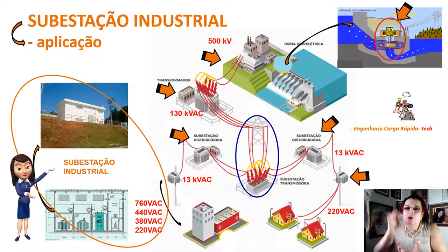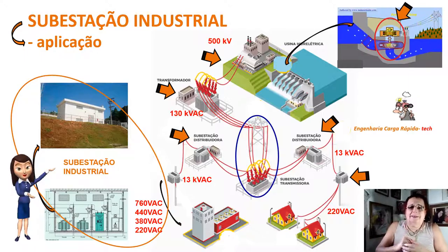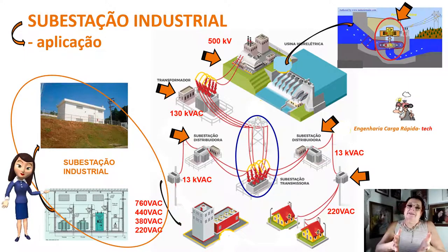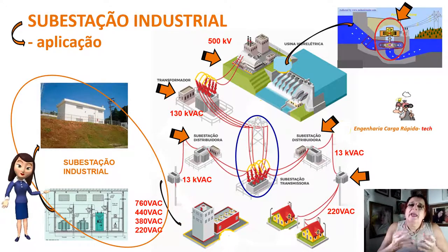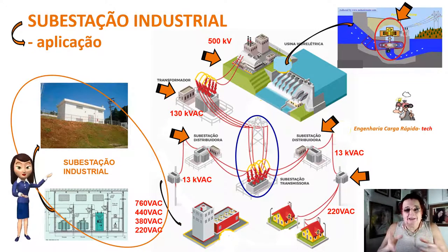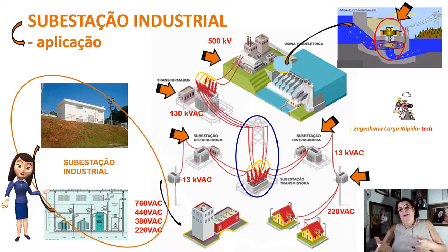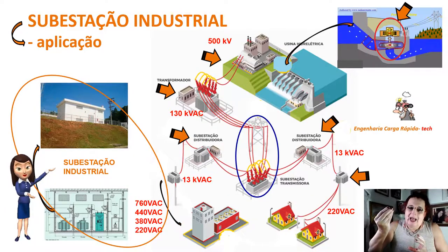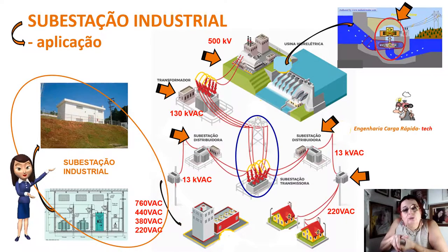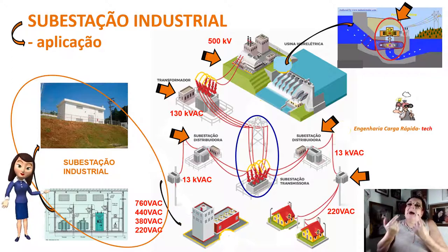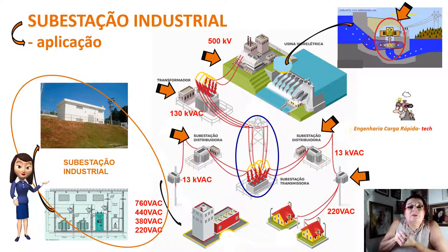A subestação industrial rebaixa os 13 mil volts para 760, 440, 380 ou 220 volts para escritórios. É comum que máquinas industriais operem com 440 ou 380 volts, pois quanto maior a tensão de alimentação, menor a bitola do cabo, tornando mais barato formar todo o circuito elétrico da indústria com cabos mais finos.